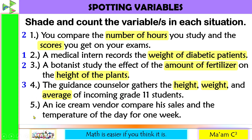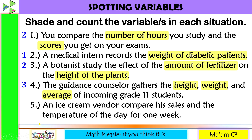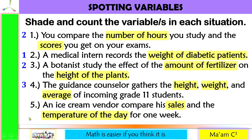Last one: an ice cream vendor compares his sales and the temperature of the day for one week. What could be the variables in this situation? We have the sales and the temperature of the day — two variables.